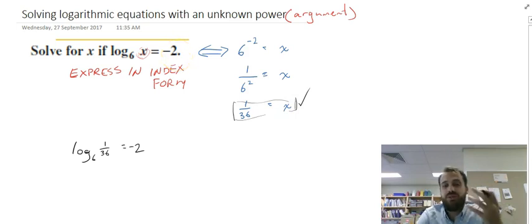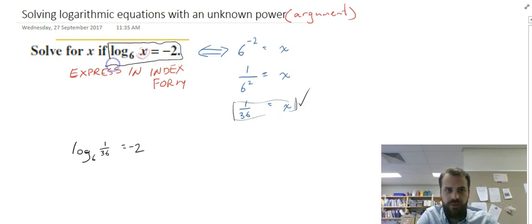Now obviously these questions can be more difficult. We can have numbers out here, we can have more complicated stuff on the right-hand side. But once you've got it in this form, log base something with unknown here equals a number, express it in index form, find yourself an answer. There's not much more to it than that.